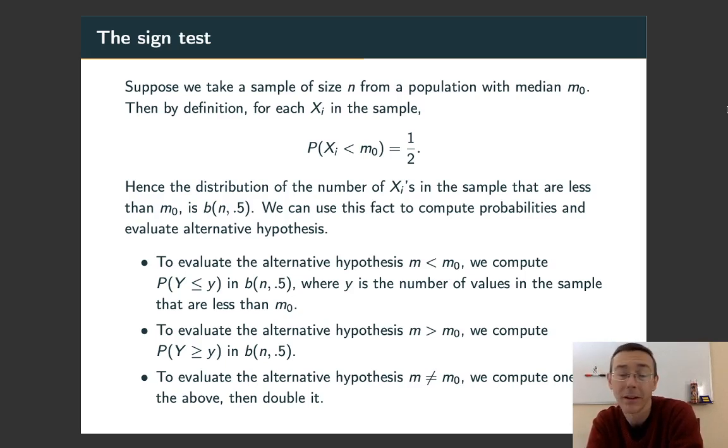If we're evaluating the other one-sided hypothesis m greater than m0, we're going to compute P(Y ≥ y) in B(n, 0.5). If we're doing a two-sided hypothesis, we're going to compute the more appropriate one, the one that's appropriate to the y value being further from the median. So if it's above the median, then we compute the upper tail probability. If it's below the median, we'll compute the lower tail probability, and then we're going to double it. Here we're relying on the fact that B(n, 0.5) is symmetric, so the probabilities on each tail are going to be identical.